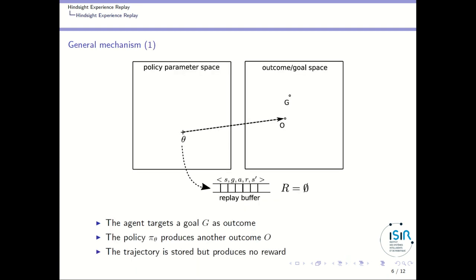The second point is to consider the mapping between the policy parameter space and the outcome space. You consider a deep neural network with some parameters. Playing your deep neural network with these parameters in some environment might produce a particular outcome, but you might be targeting a different goal. So what you do is select a particular set of parameters — the weights and biases of your neural network — and play some trajectory.